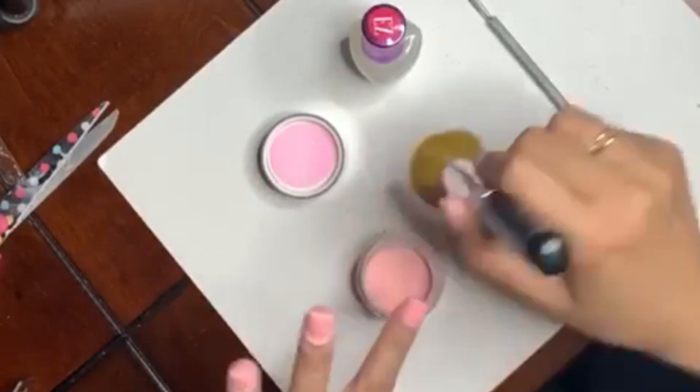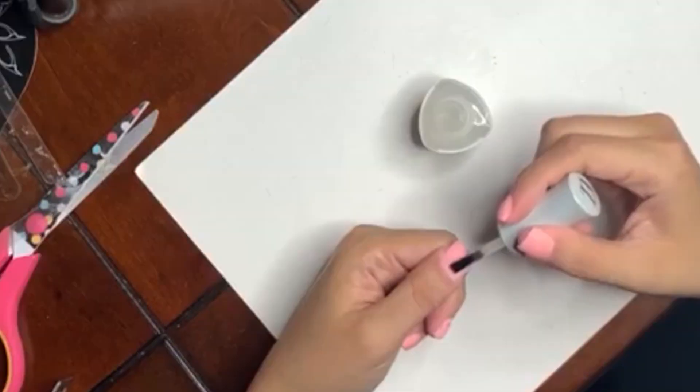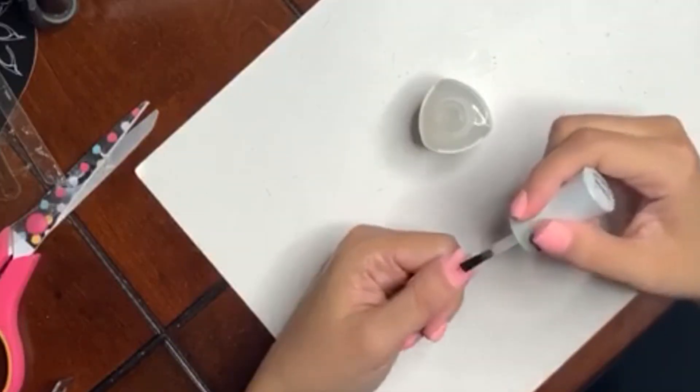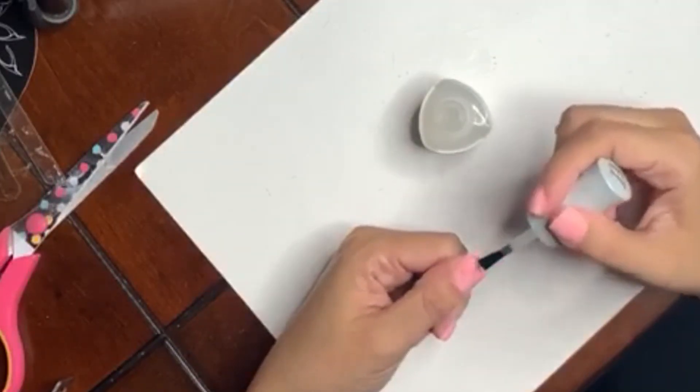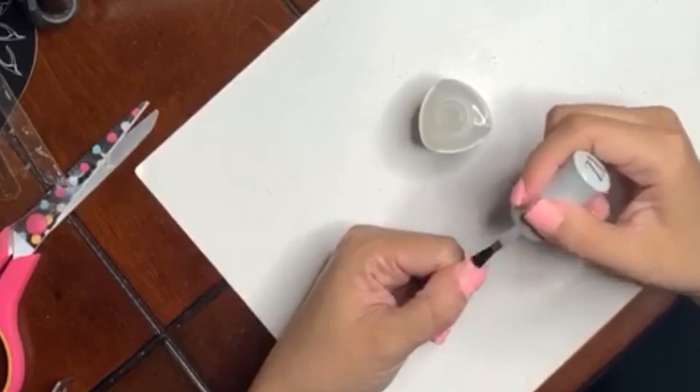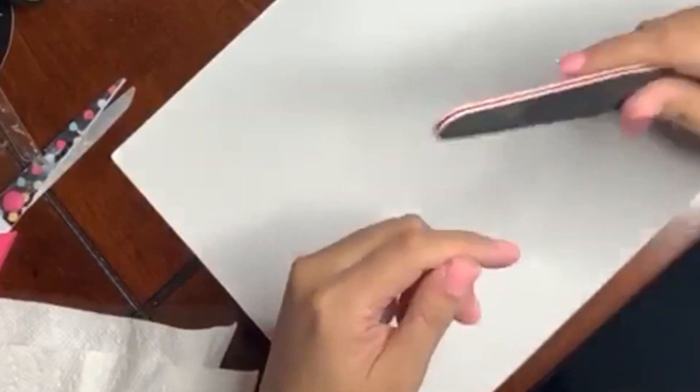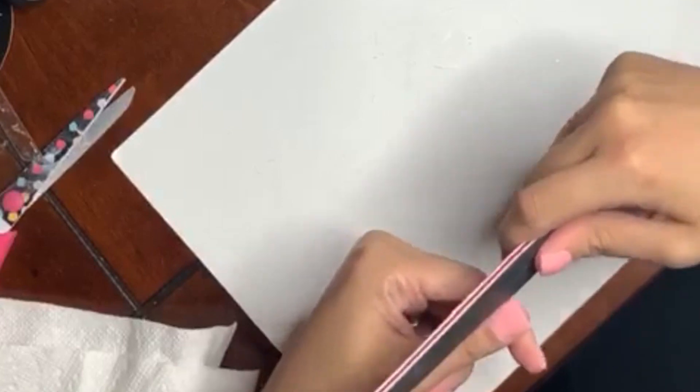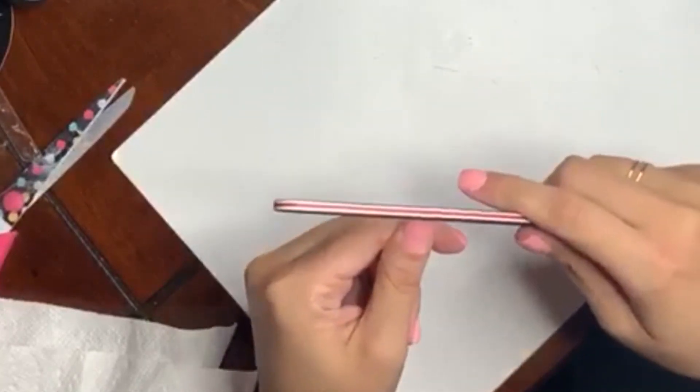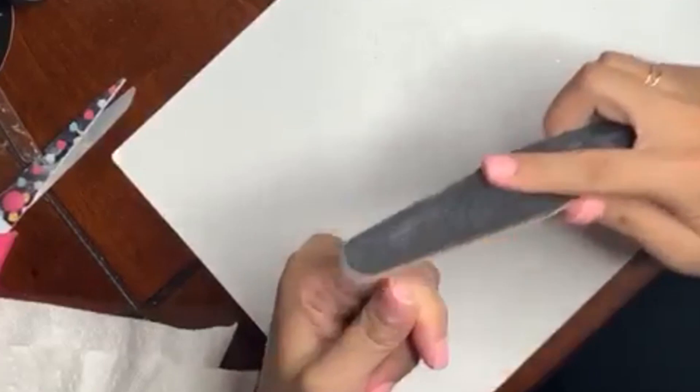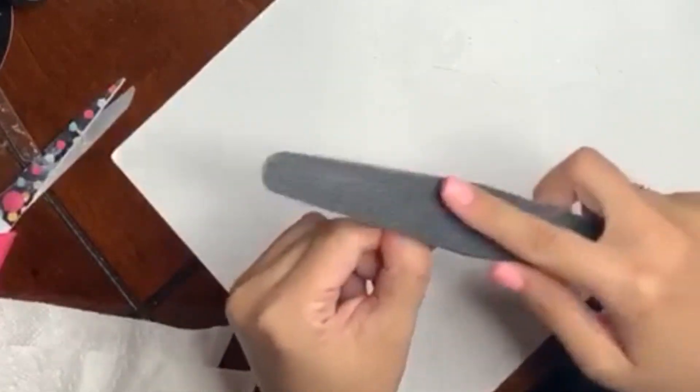I'm going to repeat the process to get as many coats as I'd like on it. After I'm done with my color, I will take step two, which is the activator. I'm going to apply a generous amount all over my nails and wait two minutes. The activator is what hardens the powder and makes it stick to your nails.